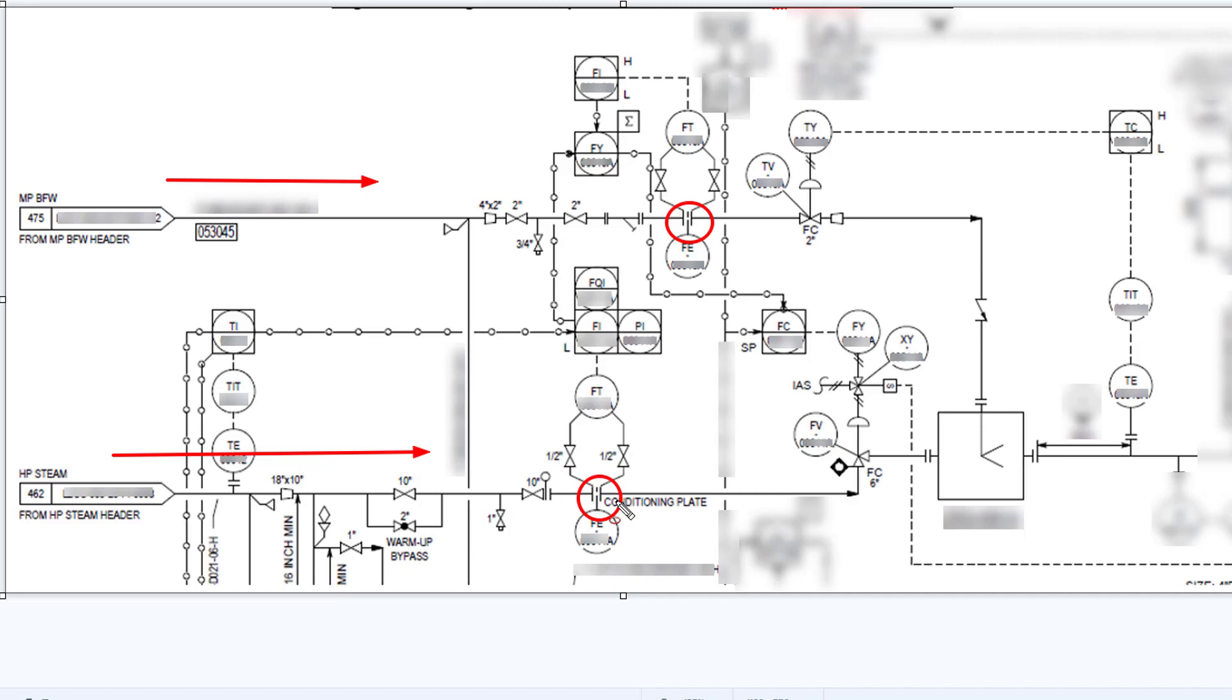Given the problems with turndown on these types of installations, it's quite common not to use flow control, but sometimes you can. It does linearize it if you are in a reliable region always. The first thing is you need a specialized device, which is shown here, and this is normally a special item from the vendor which is a desuperheater where you're injecting the water into the steam.